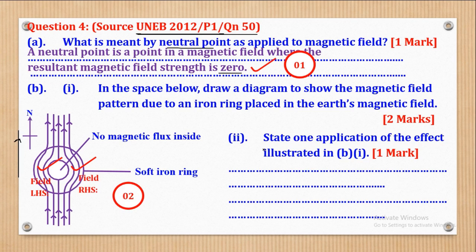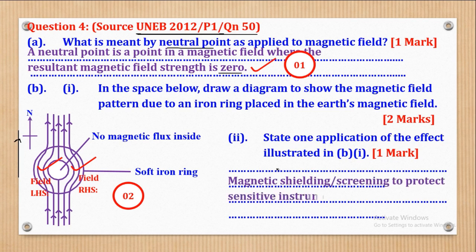Roman 2 says: state one application of the effect illustrated in B Roman 1. The application is magnetic shielding to protect sensitive instruments from magnetic fields. If you wrote that, that would be one mark.